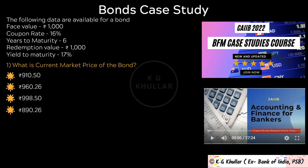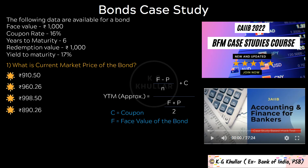Yield to maturity is approximately (F minus P) divided by N, plus C, and the whole of this divided by (F plus P) divided by 2. Where C is the coupon, F is the face value of the bond, P is the current market price, and N is years to maturity. I would request you to watch that mock test video as well.